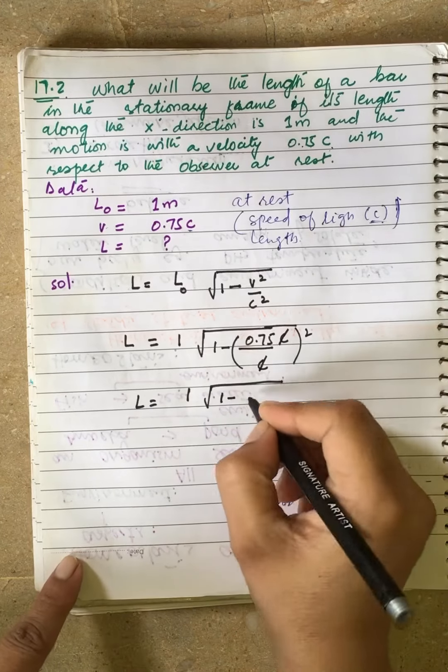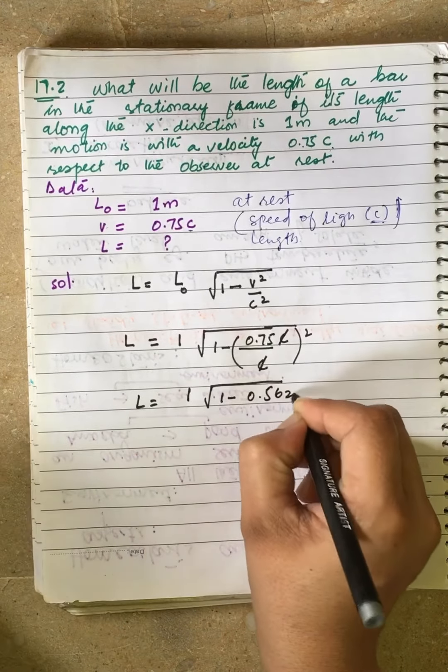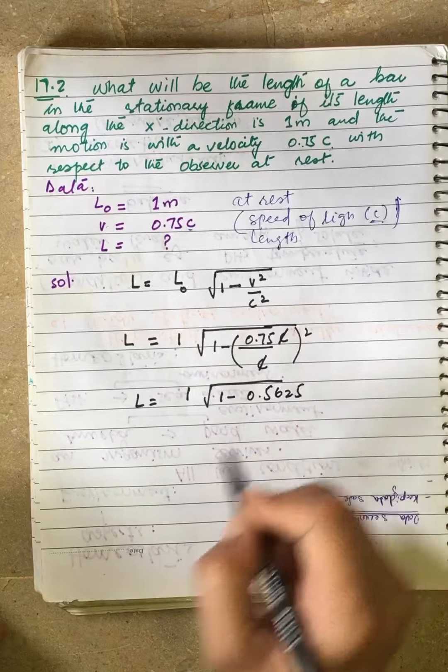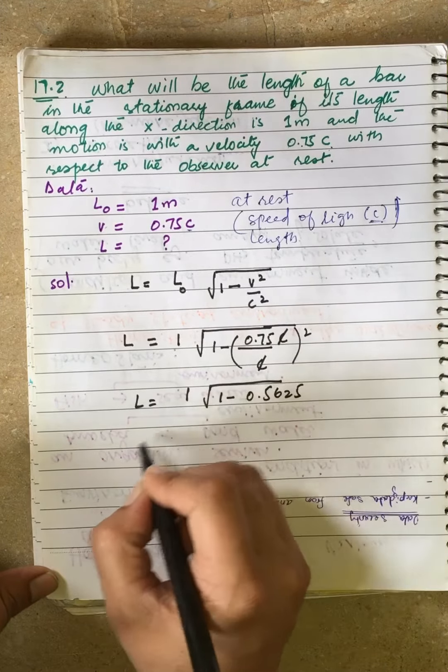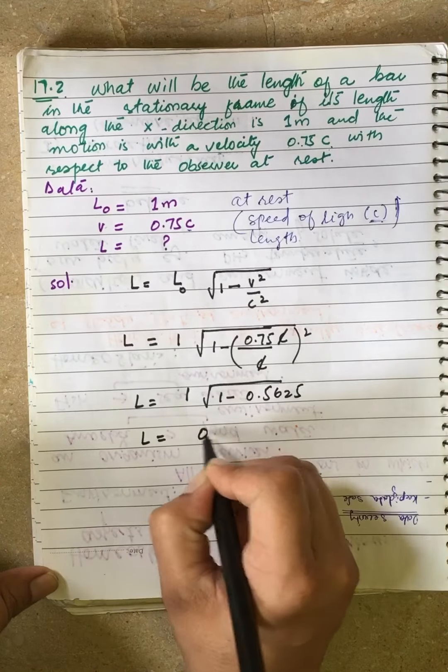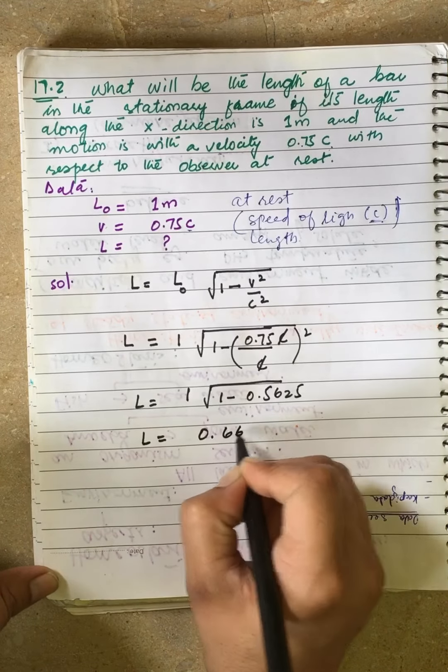Now we take the square root. Then 1 minus 0.5625, and L equals 0.66 meters.